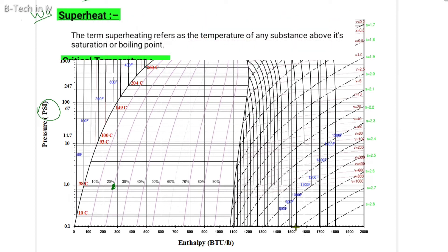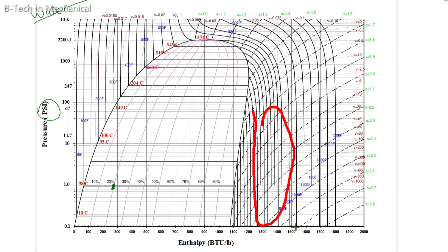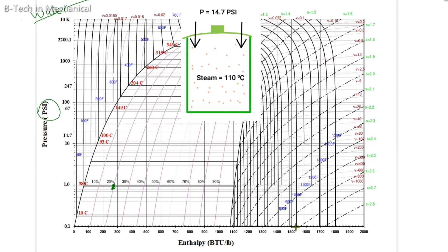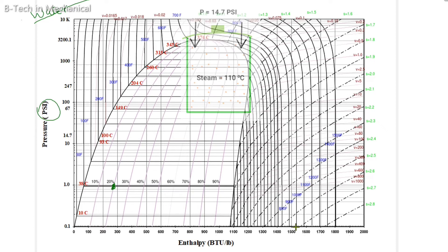Now, superheating. The term superheating refers to the temperature of any substance above its saturation or boiling point. A substance's superheating condition means its temperature goes above its saturation or boiling point, under any pressure — this is called the superheating condition, and on the PH chart it is shown to the right of the saturation vapor line. For example, if steam in a pot is under normal atmospheric pressure of 14.7 PSI and it is heated above 100°C — to 101, 102, or 110°C — that substance is in a superheated condition.